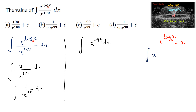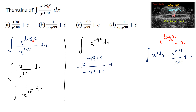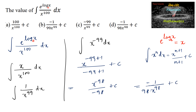Using the power rule, integral of x to the power n dx equals x to the power (n+1) by (n+1) plus c. So we get x to the power (minus 99 plus 1) divided by (minus 99 plus 1) plus c, which is x to the power of minus 98 divided by minus 98 plus c, or equivalently minus 1 by (98 times x to the power 98). So option D is the answer.